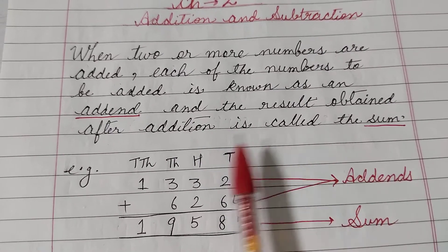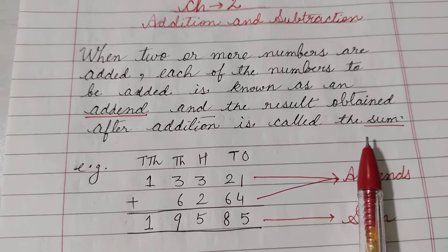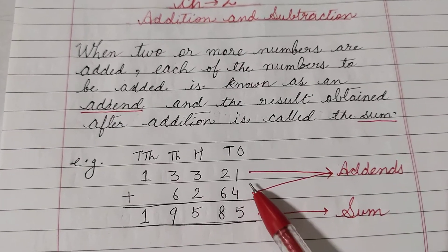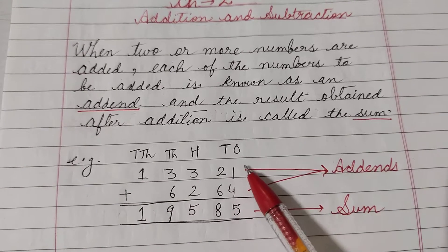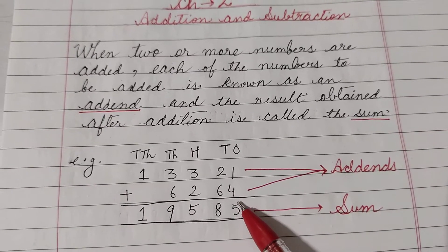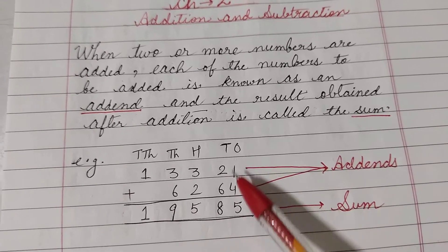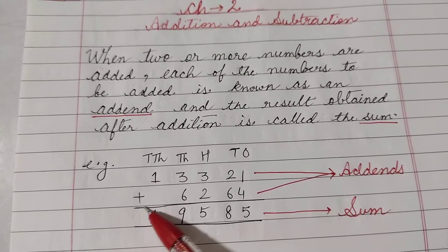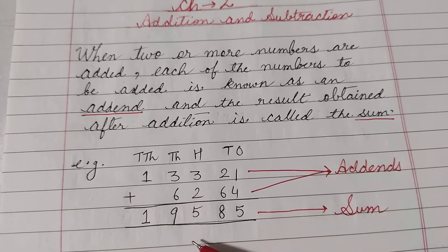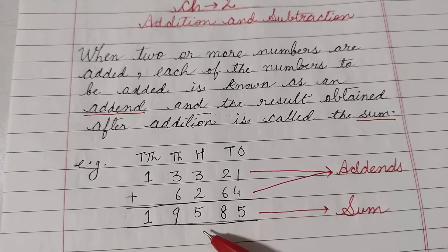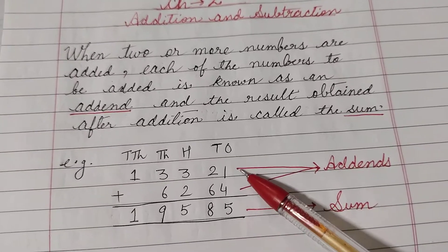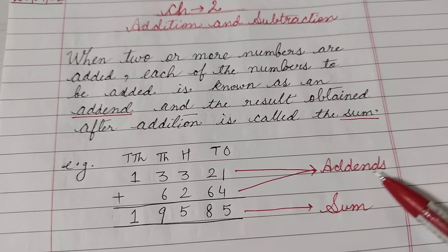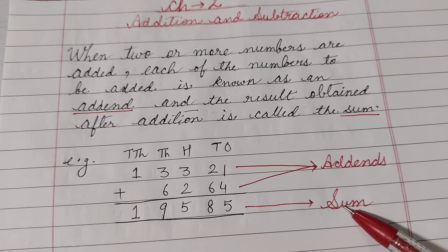And the result obtained after addition is called the sum. Suppose children, we are adding 2 numbers, 13,321 and 6,264. So, arrange these 2 numbers according to Indian place value chart. Now, when you add, we are getting answer 19,585. So, children, the numbers which we are adding, these are called addends. And the result is called the sum.